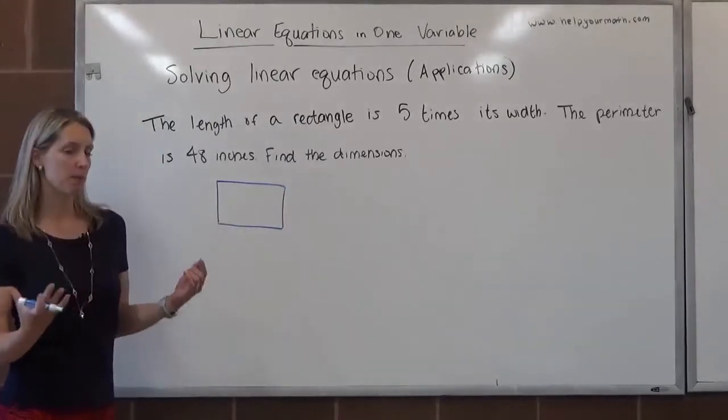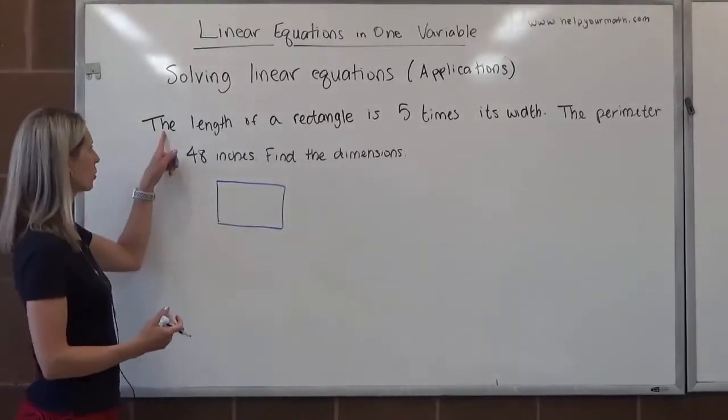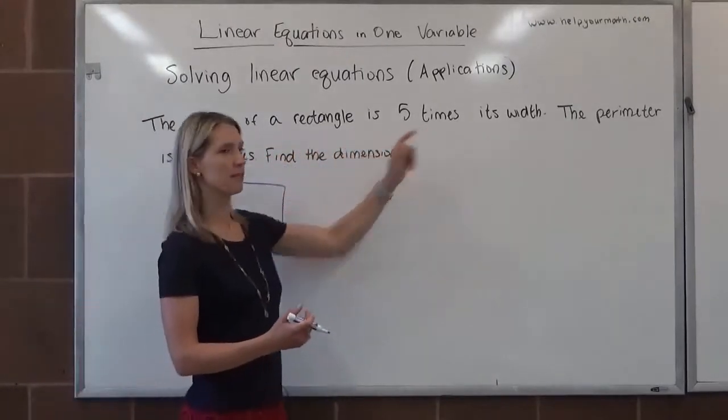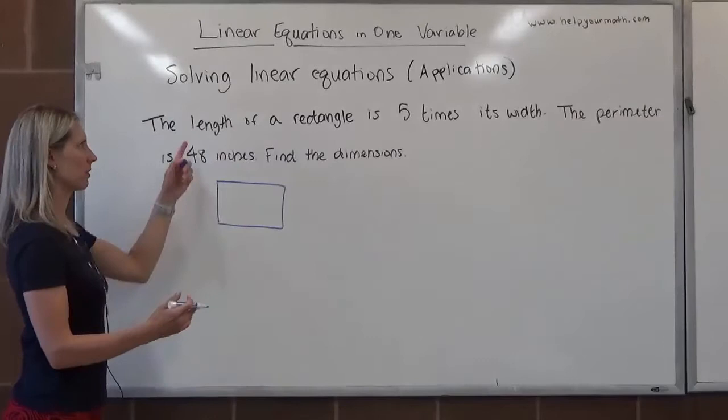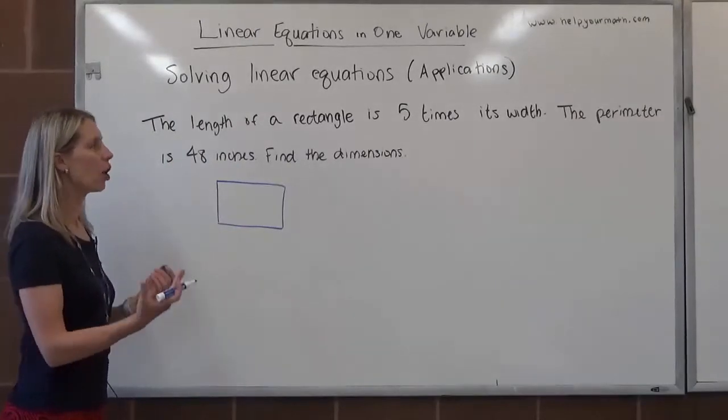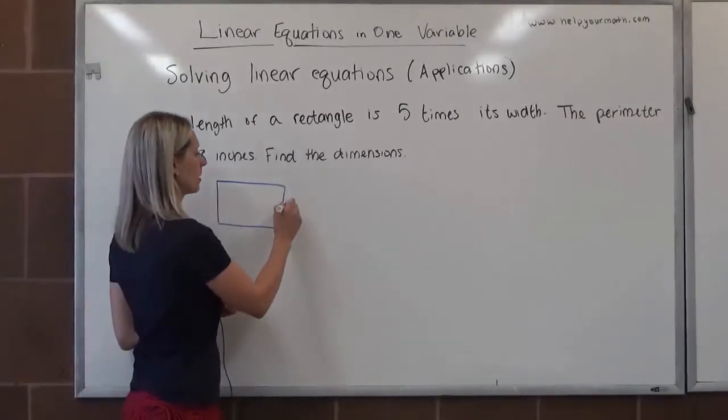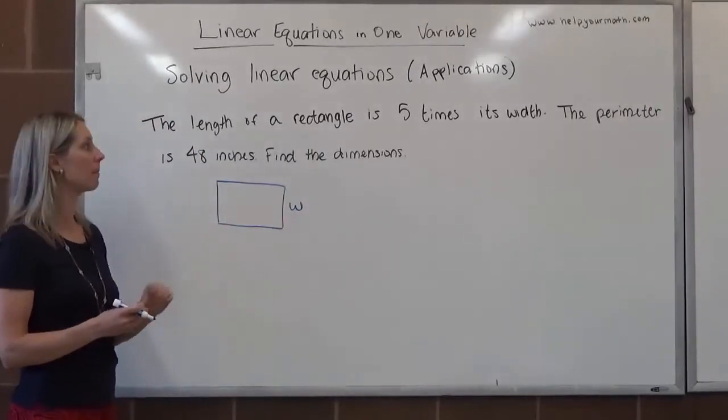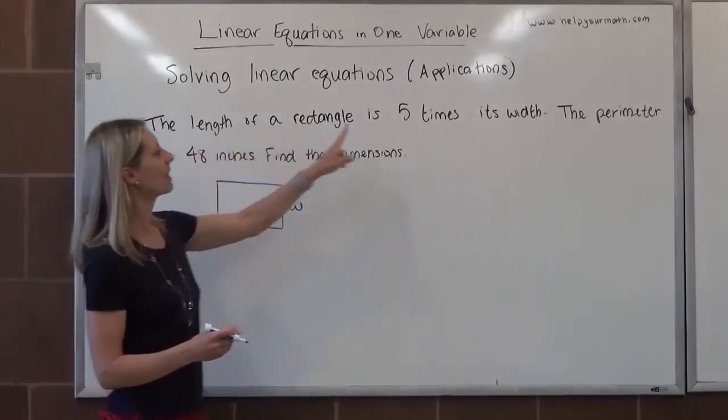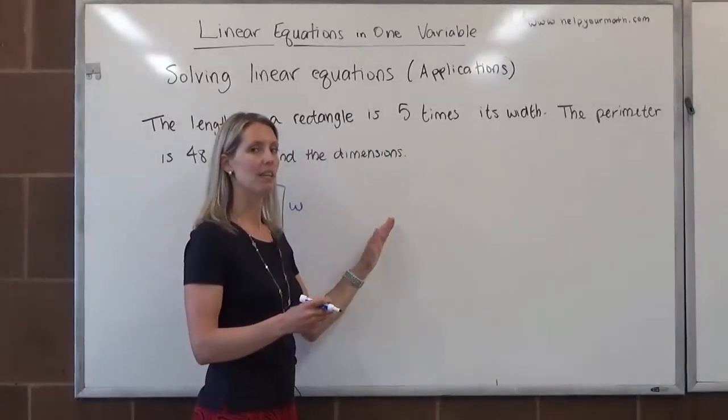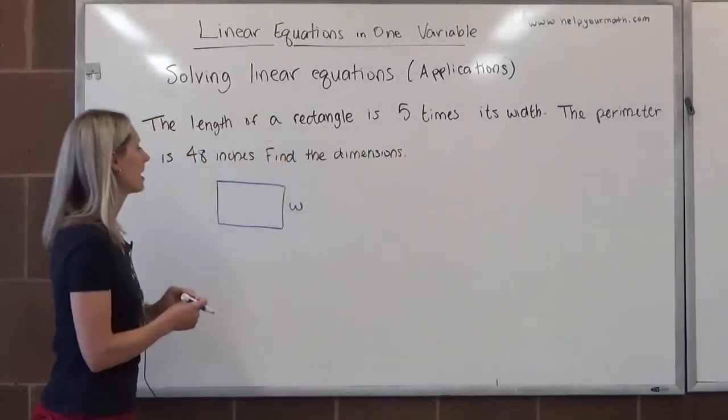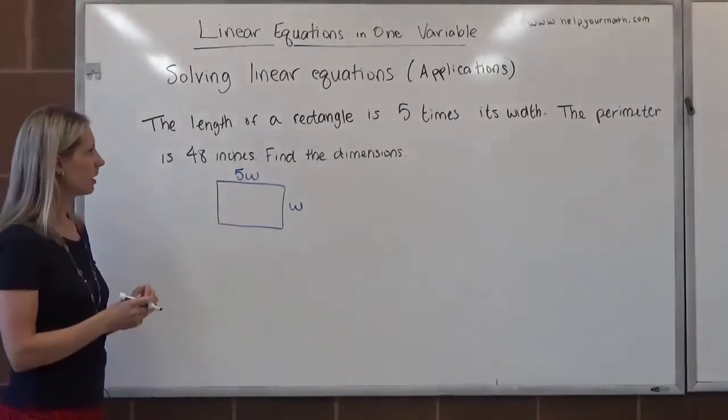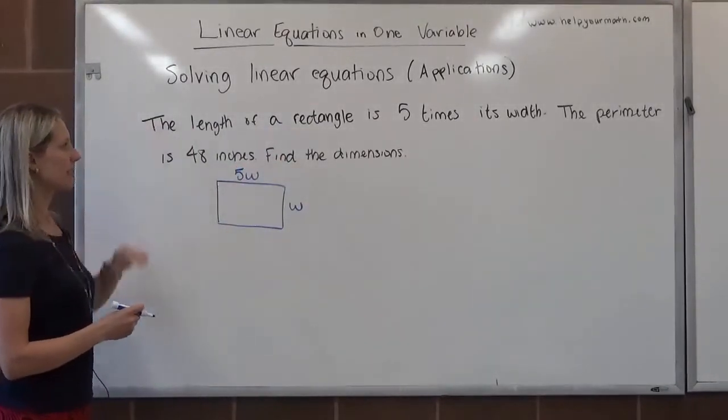It's a rectangle, so we can draw a rectangle to look like this. We're going to fill in the pieces of information that we're told. We're told that the length of this rectangle is 5 times its width. So we have two unknowns here, the length and the width. I'm going to call the width w, because the length is given to us in terms of the width. So I'm going to call the width w, and we know that the length is 5 times the width. So whatever the width is, the length is 5 times that. I can represent that by saying 5w. So that's the first sentence.